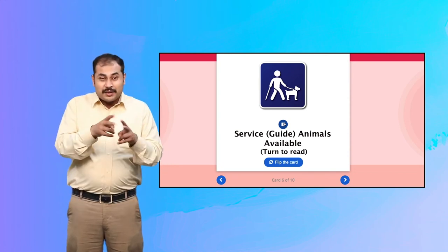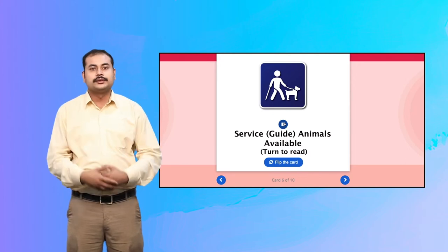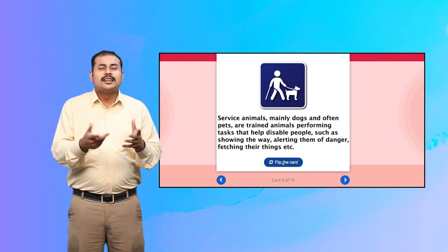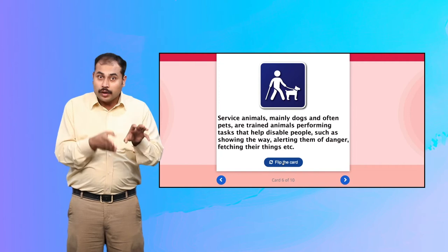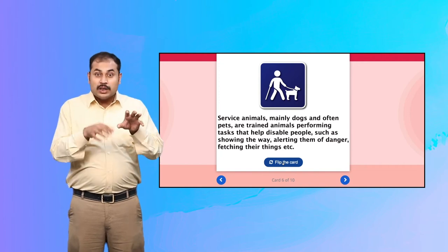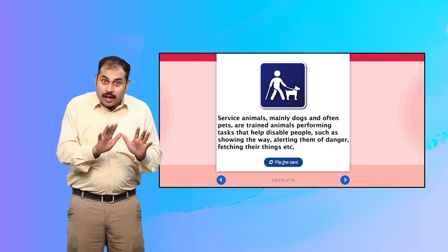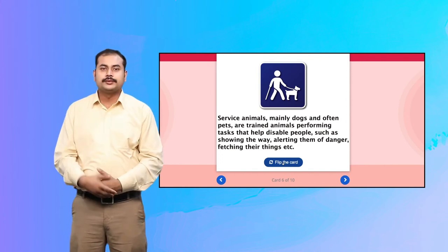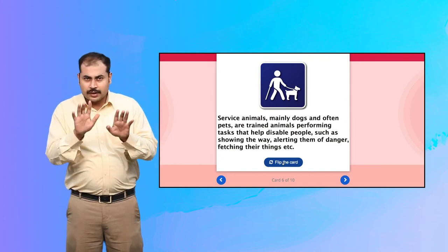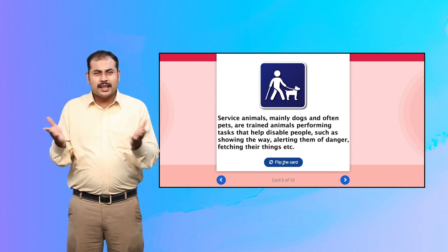Service Guide Animals Available. Service animals, mainly dogs and often pets, are trained animals performing tasks that help disabled people such as showing the way, alerting them of danger, fetching their things, etc.